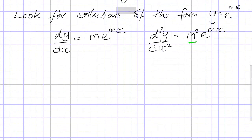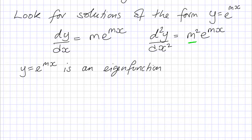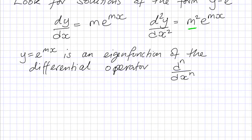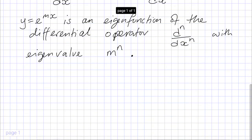We can say that y equals e to the mx is an eigenfunction of the differential operator d^n/dx^n — the nth derivative — with eigenvalue m to the power n, because every time we differentiate we get another power of m down the front. This is the key to solving our ordinary differential equation.